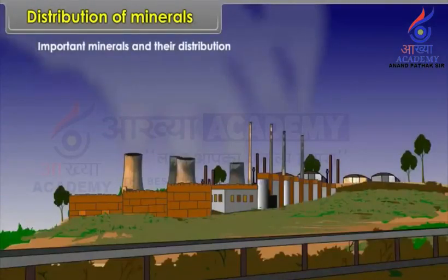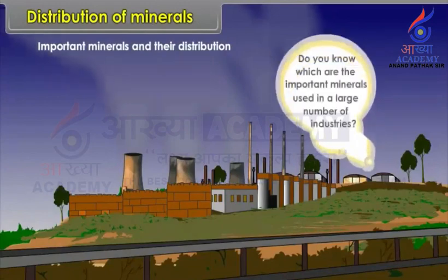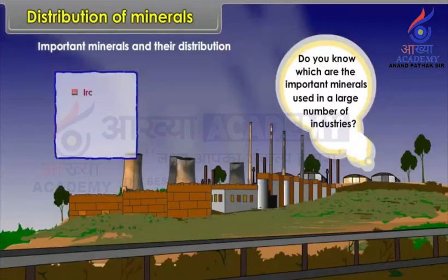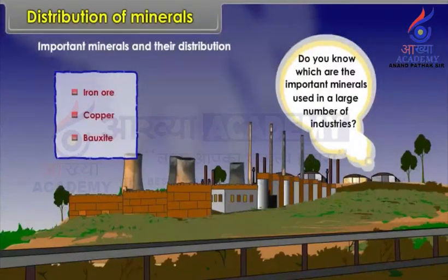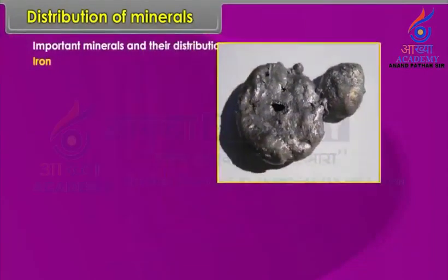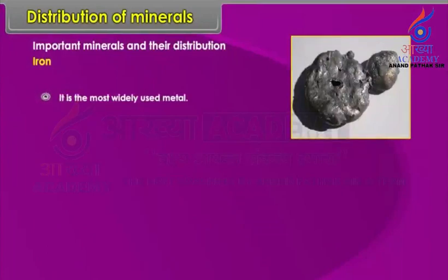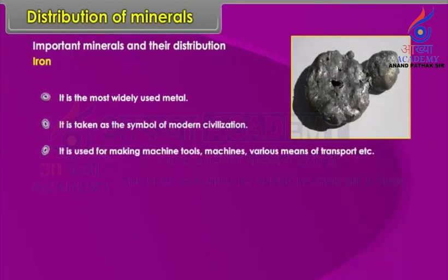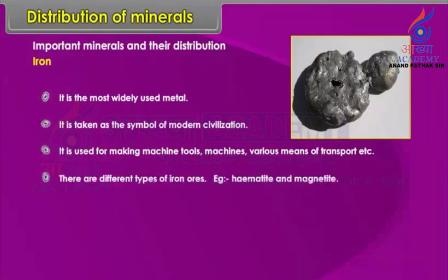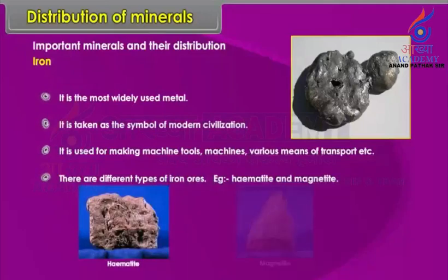Important minerals and their distribution. Iron ore, copper and bauxite are used in a large number of industries. Iron is the most widely used metal, taken as the symbol of modern civilization. It is used for making machine tools, machines, various means of transport, etc. There are different types of iron ores — for example, hematite and magnetite.